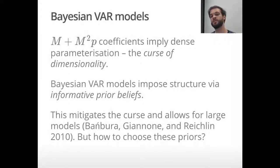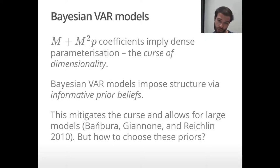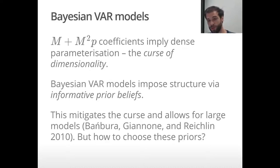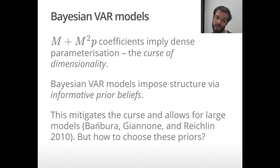Since there are a lot of coefficients, there's quite a dense parameterization, also referred to as the curse of dimensionality. This is a problem for estimation, which in a Bayesian setting is dealt with by imposing extra structure through informative prior beliefs. The idea is that you have some additional information that allows you to estimate larger models and thus mitigate the curse of dimensionality.